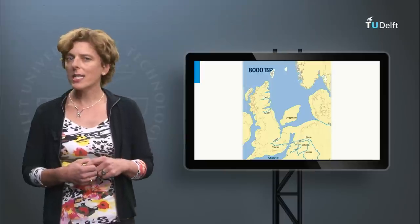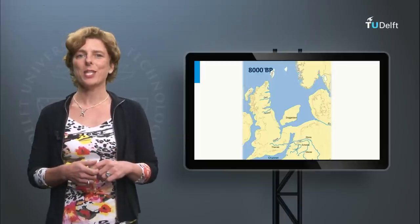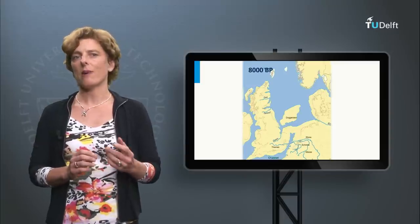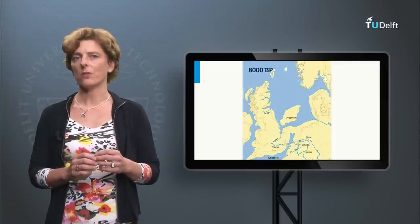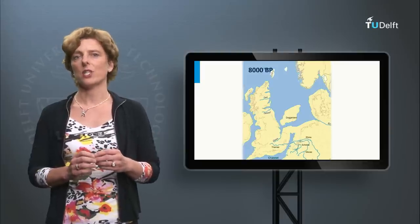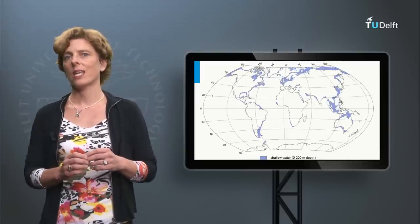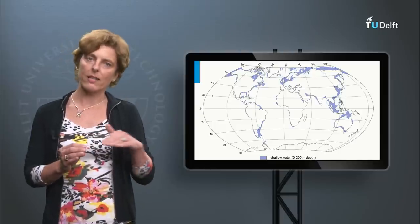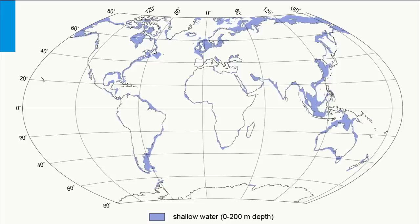But rising sea levels have not just impacted the North Sea. All around the globe, the relatively shallow areas that surround our continents have been drowned. We call these areas continental shelves. They are nowadays recognized as the underwater land masses that extend from our continents, with water depths up to and often less than 200 meters.